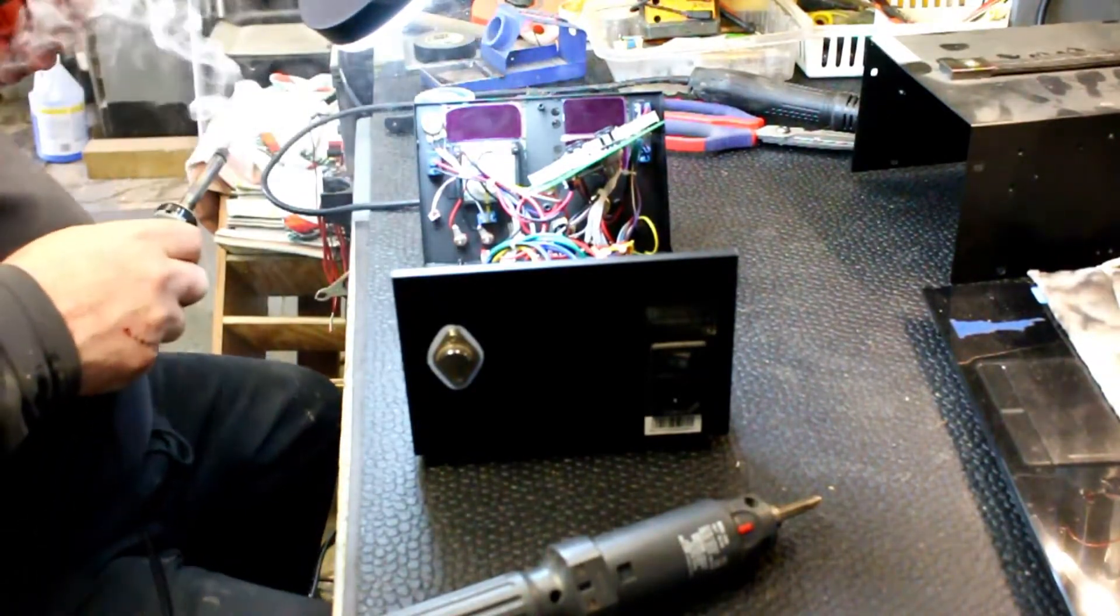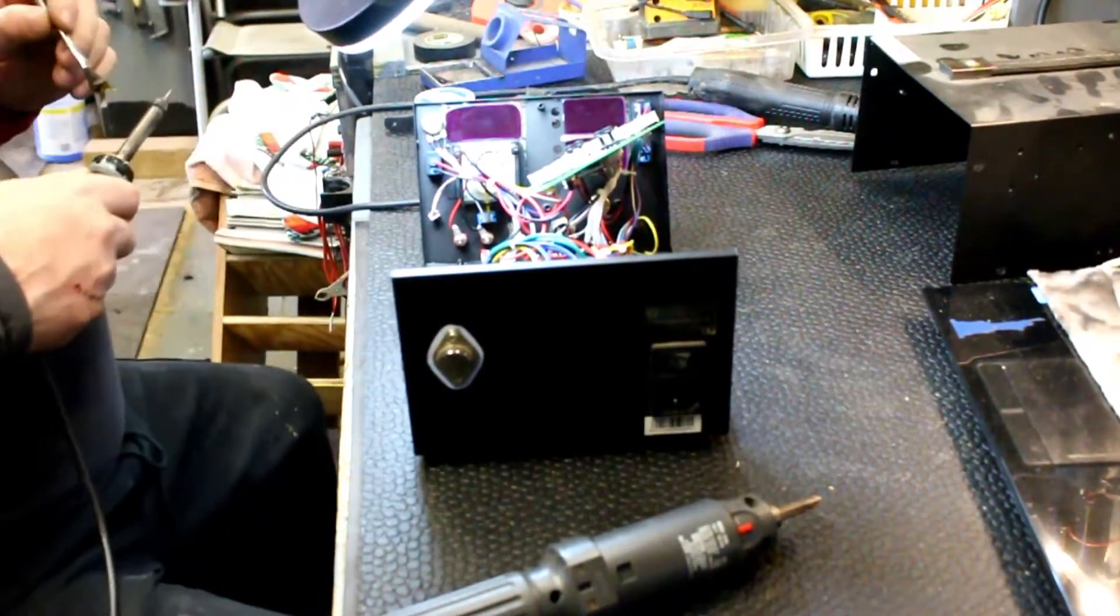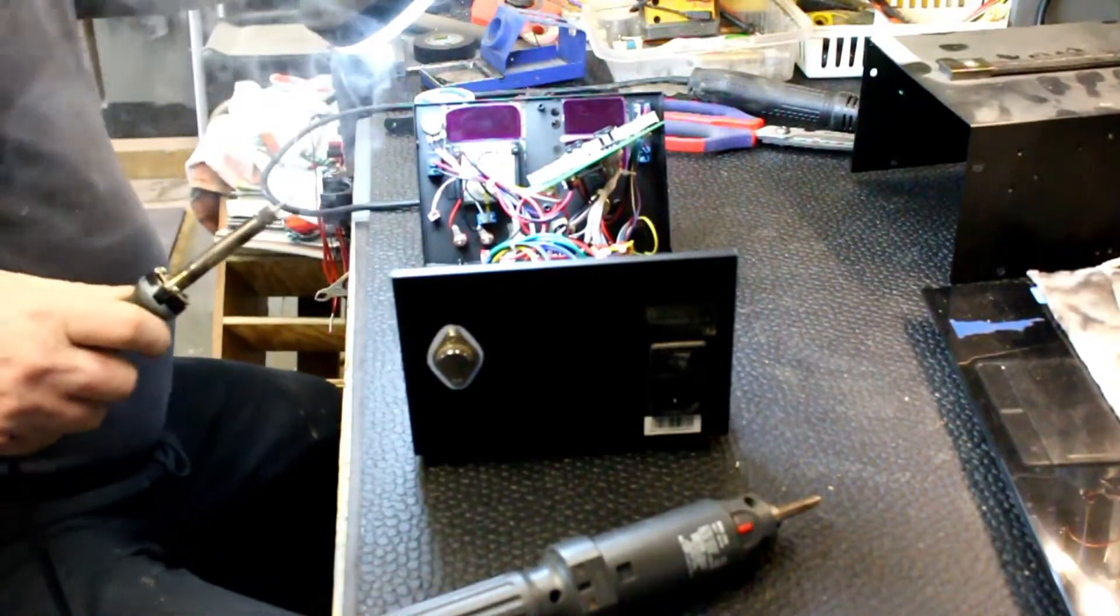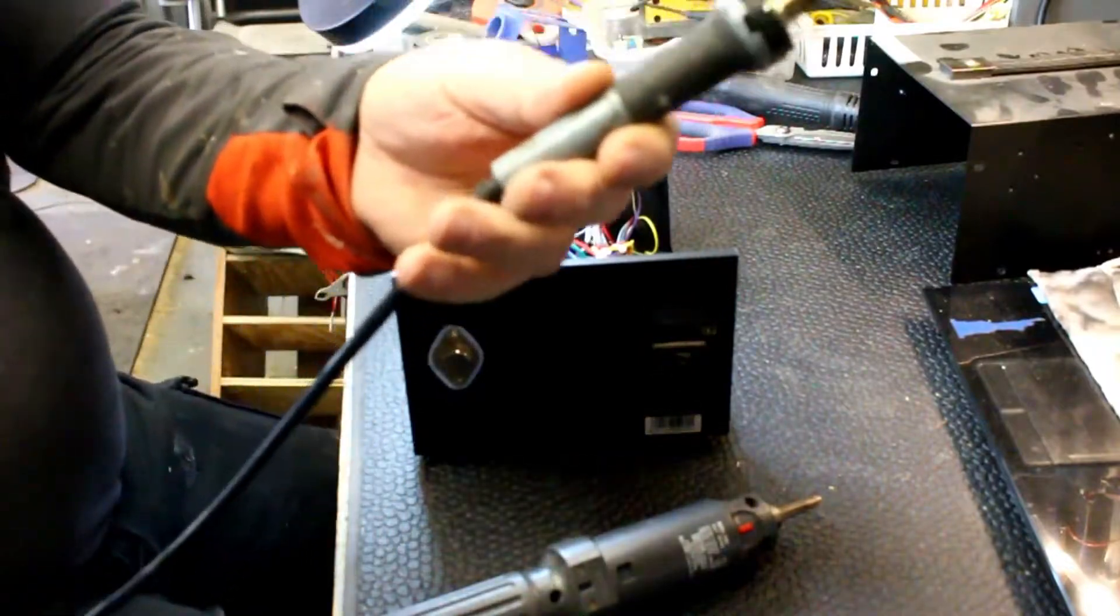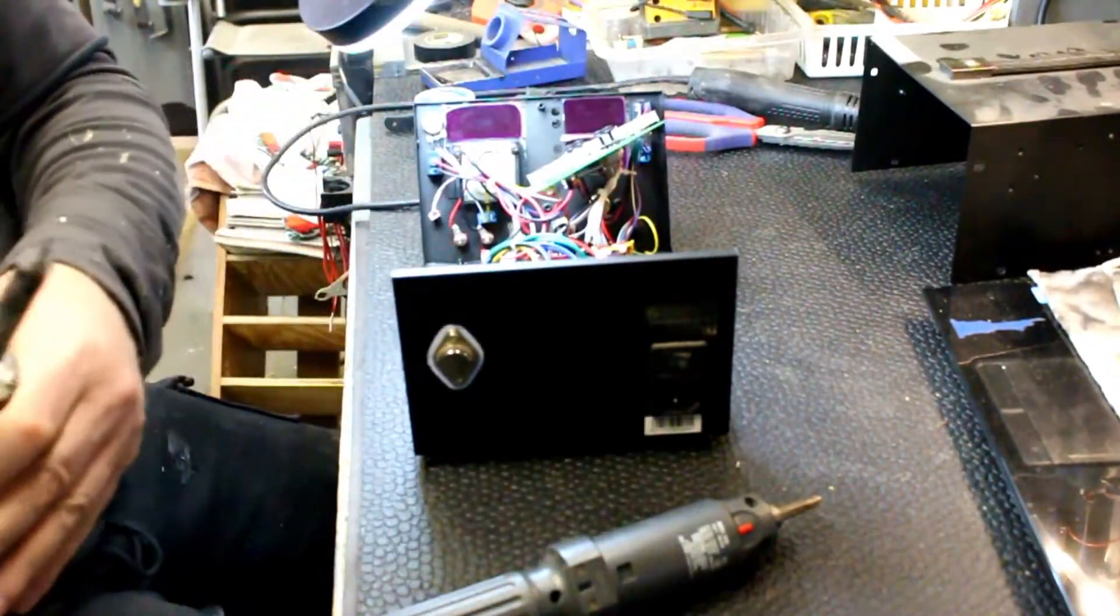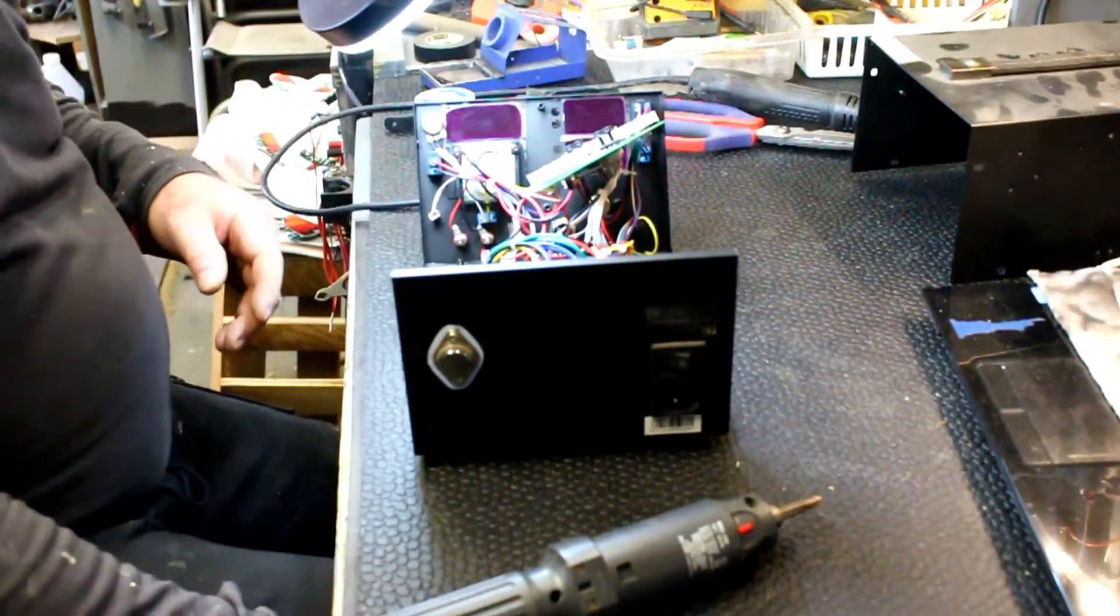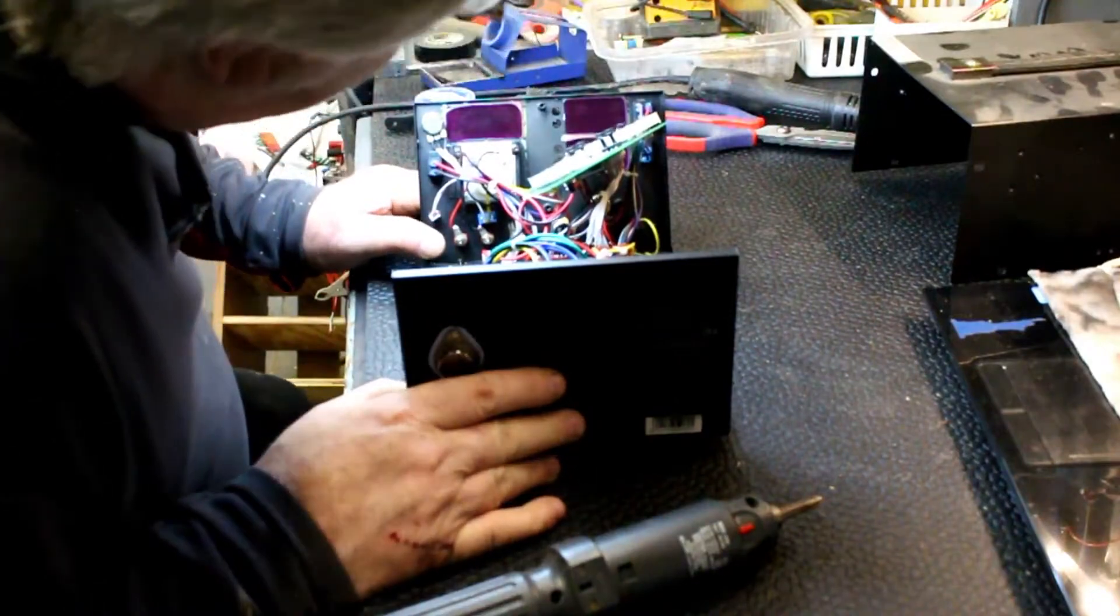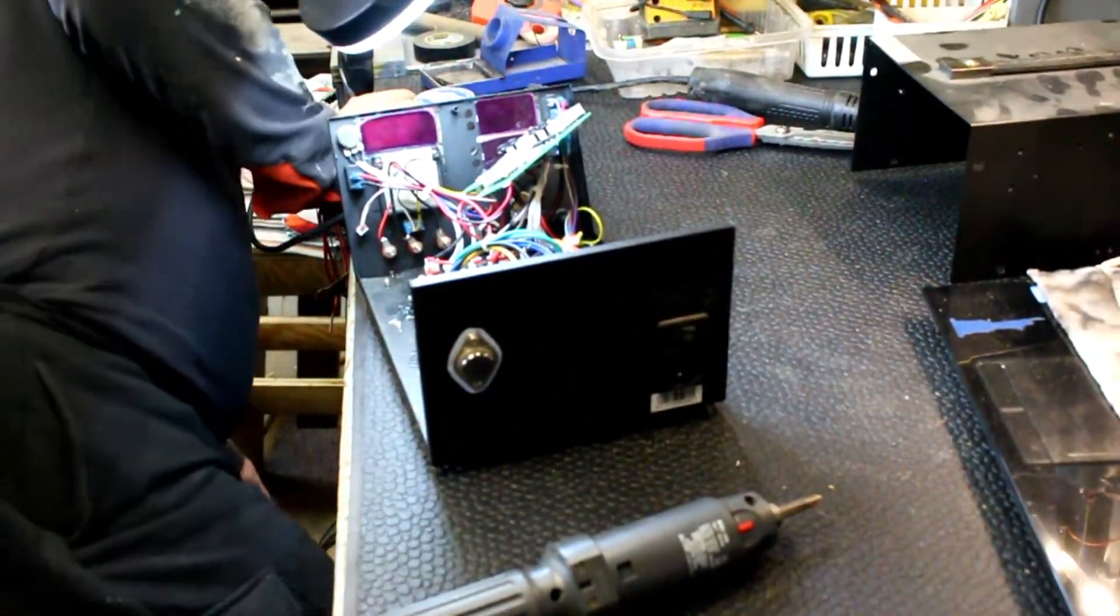The solder tip would get changed maybe every couple weeks. The solder unit itself maybe about every two years. But the station was always there. It never had an issue. You know, nowadays nothing wants to work. It's a nightmare. You keep buying crap.